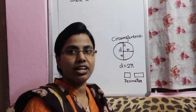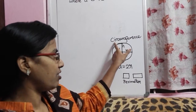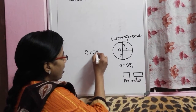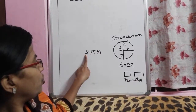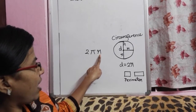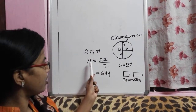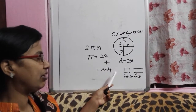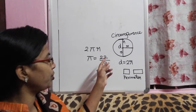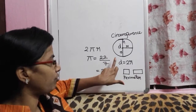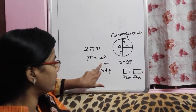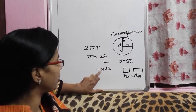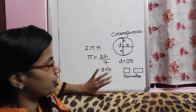What we are going to learn is finding out the circumference of a circle. The formula is 2πR. Pi is equal to 22/7 or 3.14. According to the question, you have to use the appropriate value. If you have a value that is a multiple of 7, then we will use 22/7. Otherwise, we are going to use 3.14.